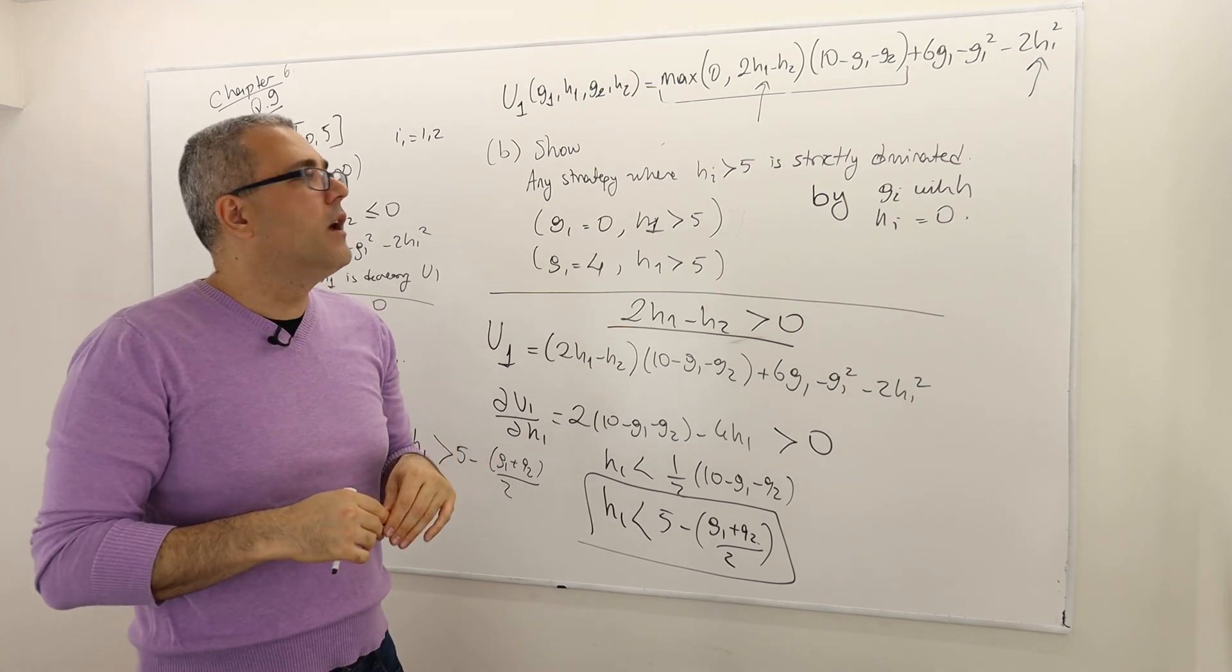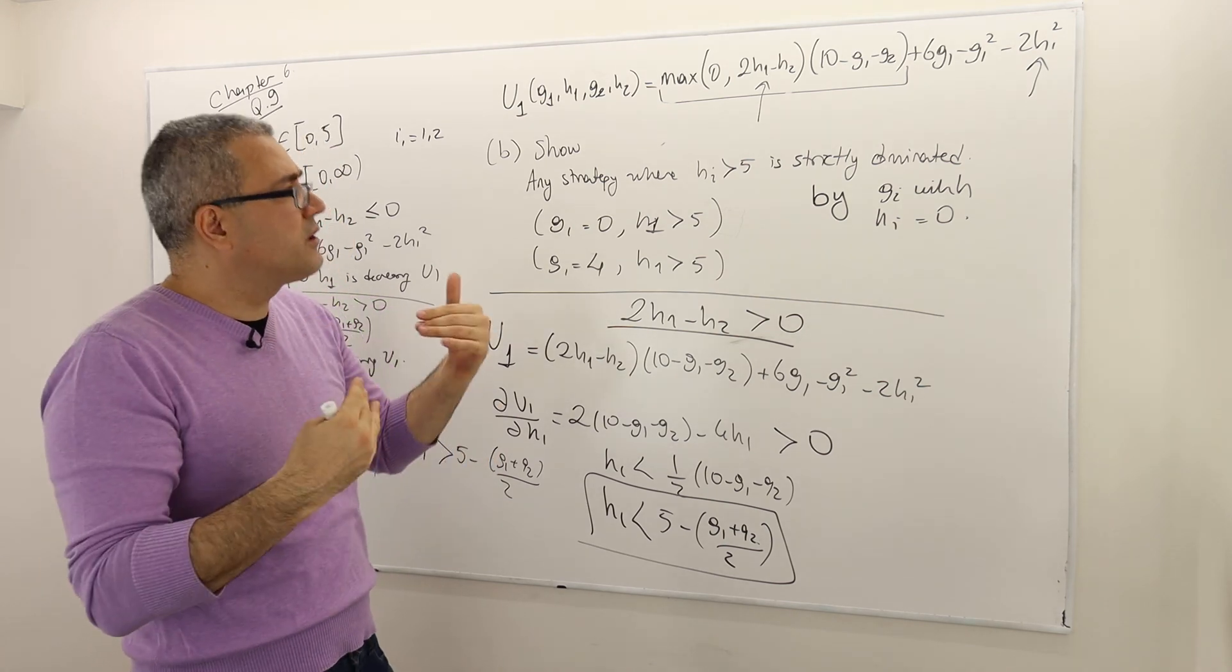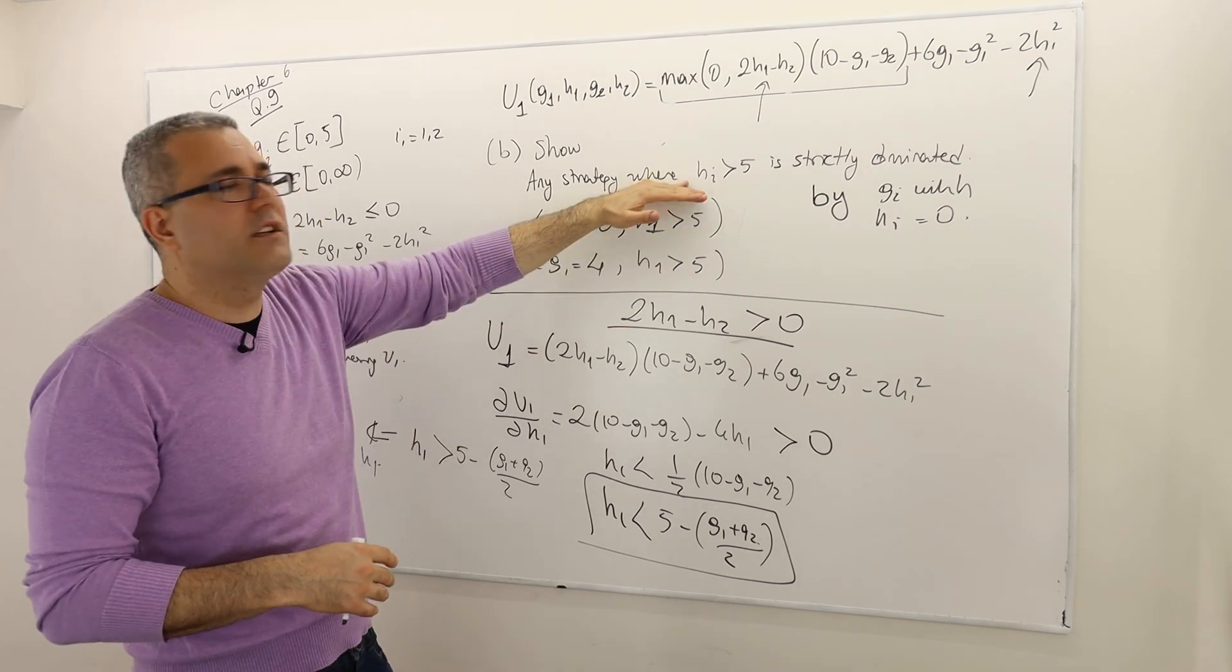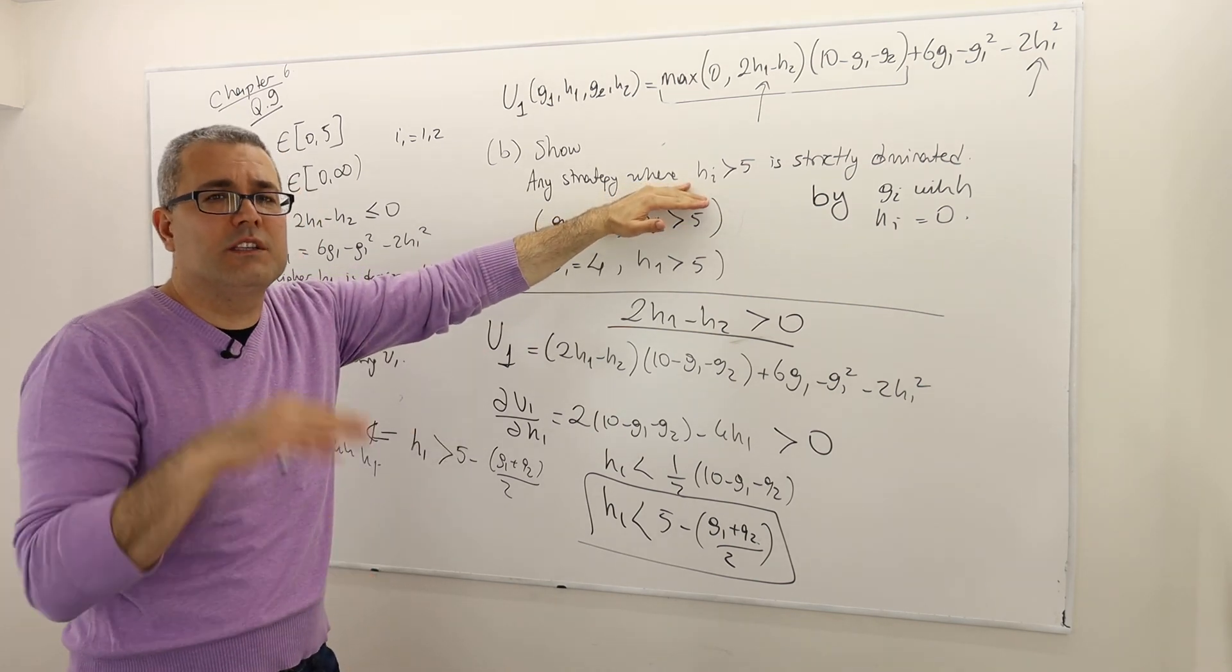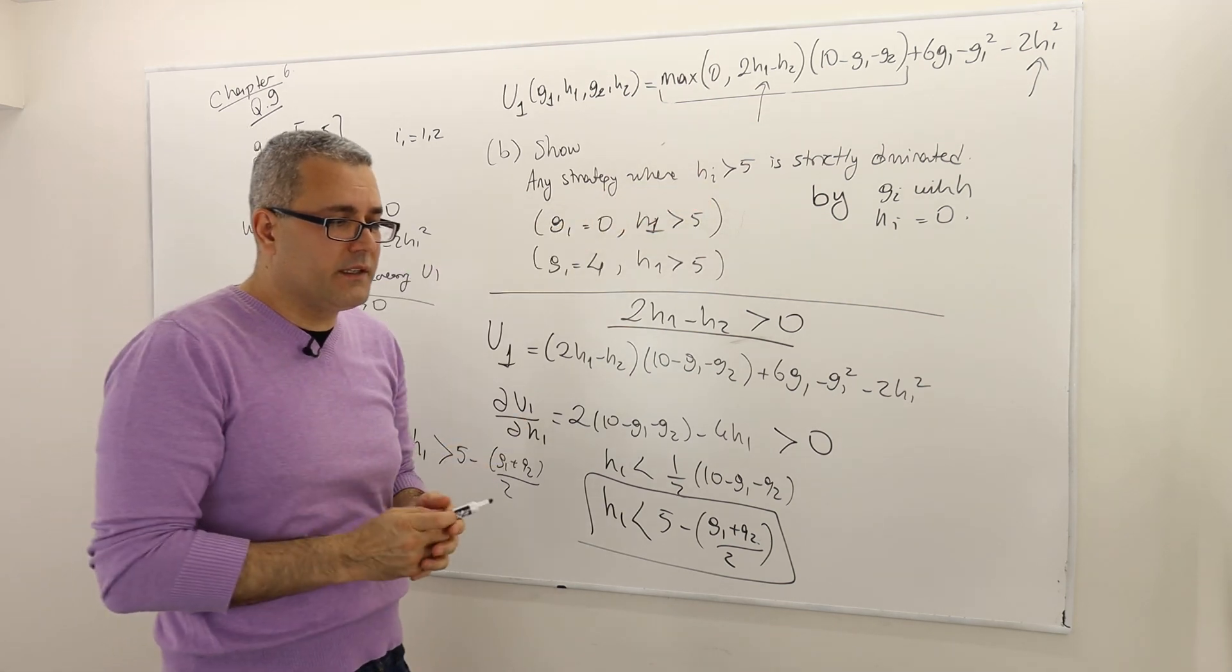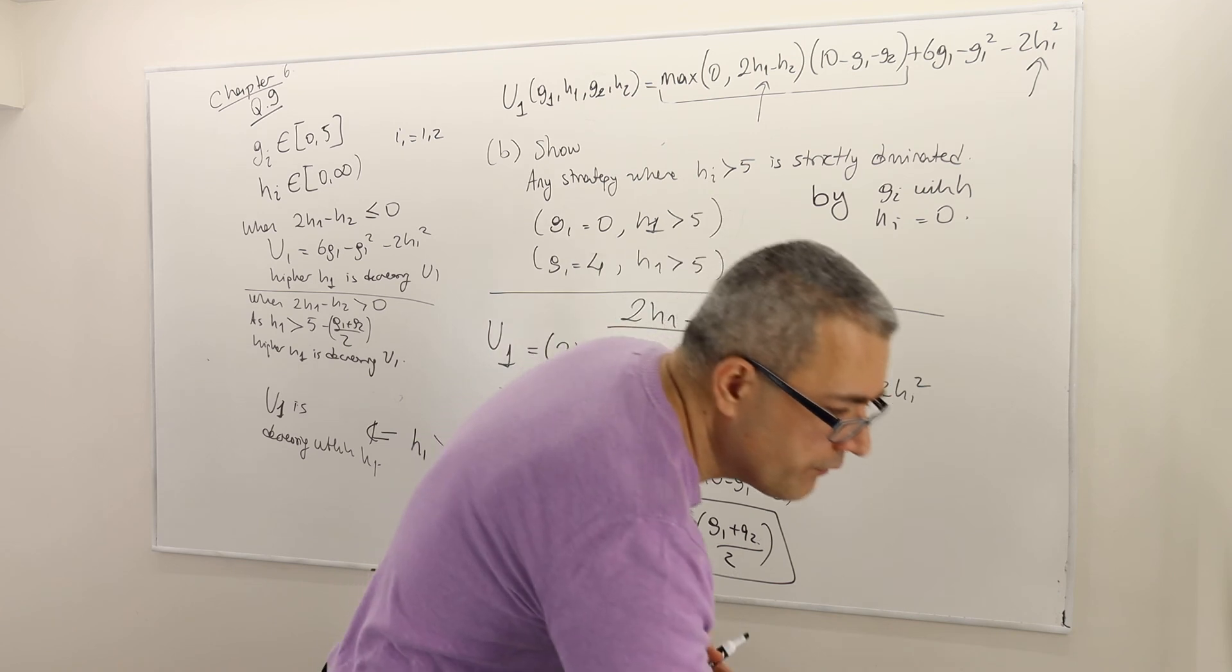And so in that case, trust me, you're going to get strictly higher payoff than the strategy you're following where your strategy is selecting H_i higher than 5. Okay, so basically this is how we sort of prove this argument.